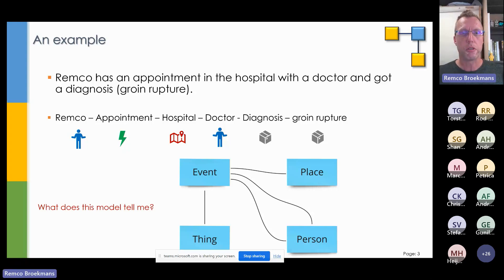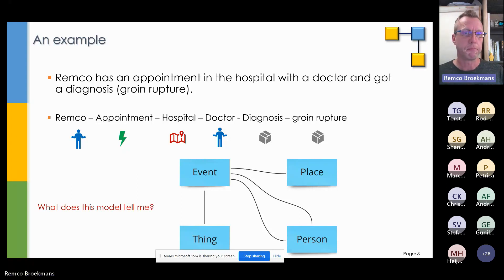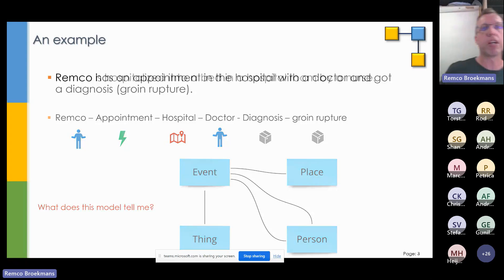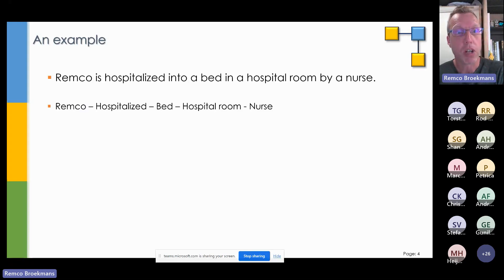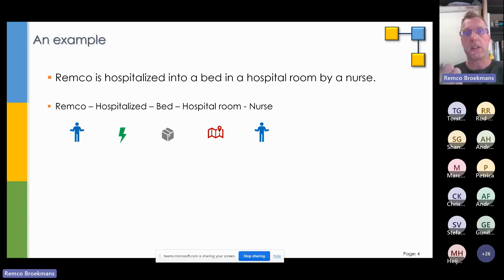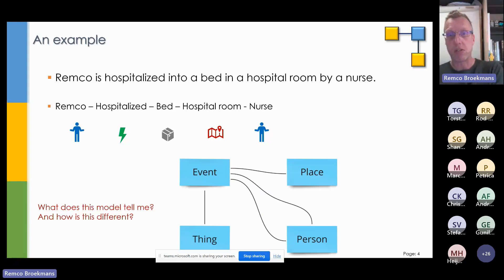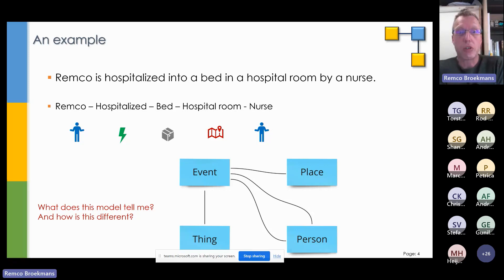What does the model tell me? Well, it should say something about REMCO going into a hospital, having an appointment with a doctor, and being diagnosed with groin rupture. But does it really tell me that? Another example: REMCO hospitalized into a bed, into a hospital room by a nurse. So: REMCO, hospitalized, bed, hospital room, nurse — categorized as person, event, thing, place, person. And the model comes back: there's an event related to a place, event related to a person, event related to a thing. But again — what is this model telling me, and how is this model different from the model we had before?